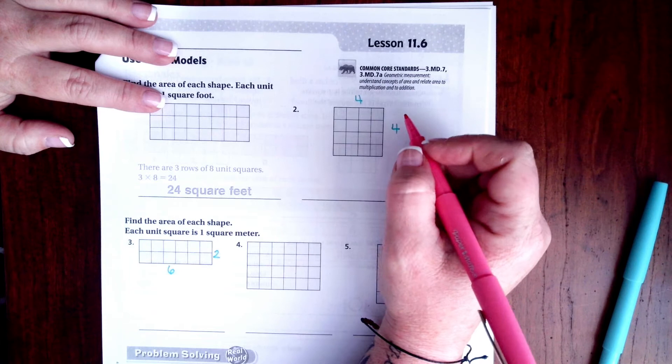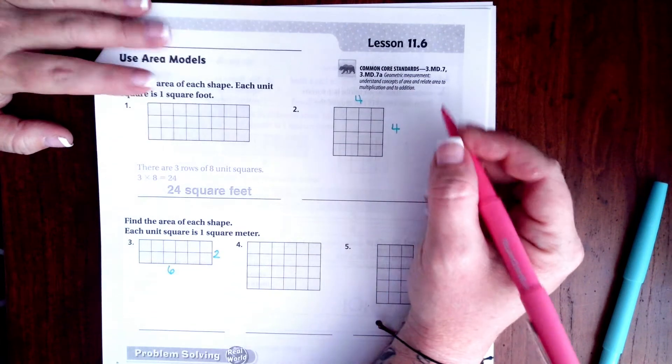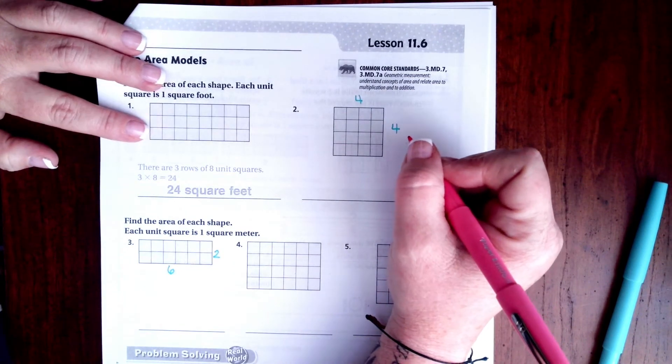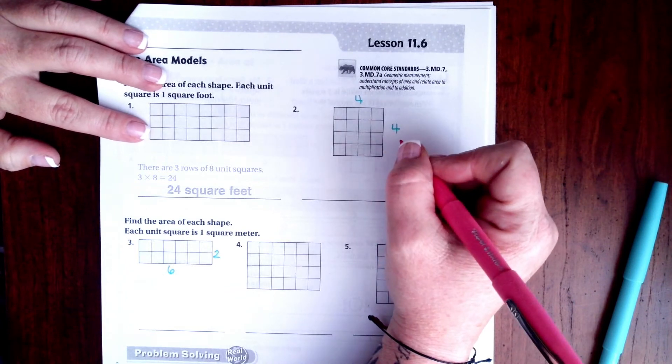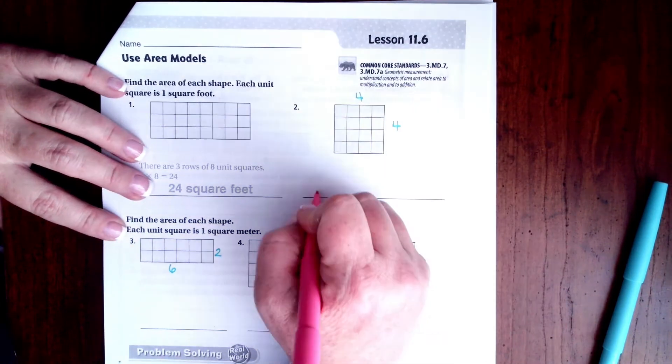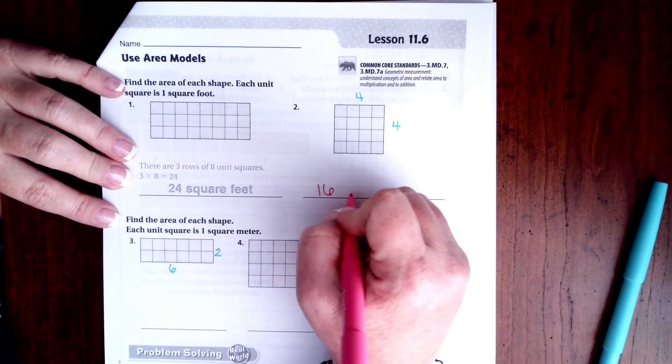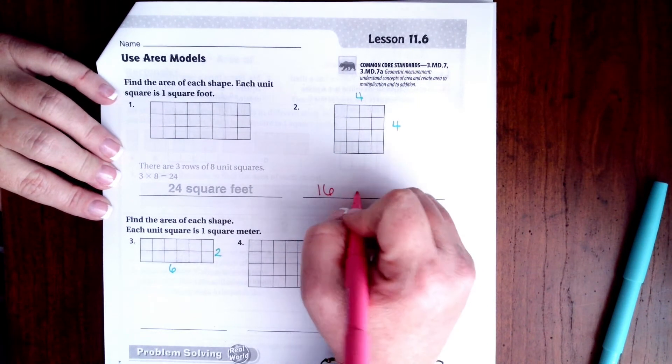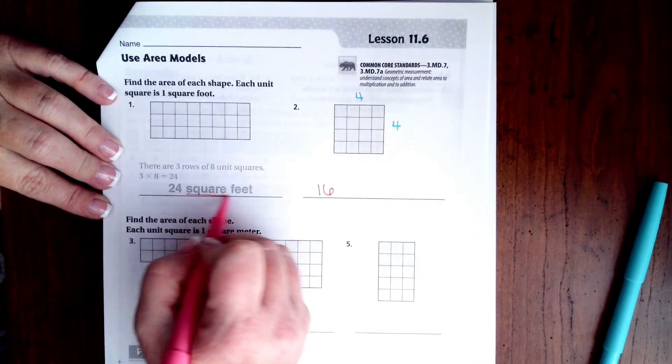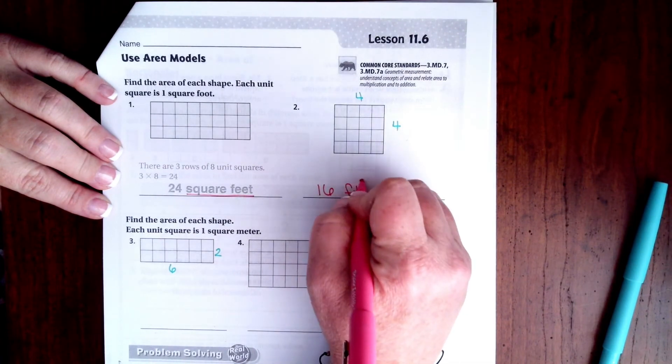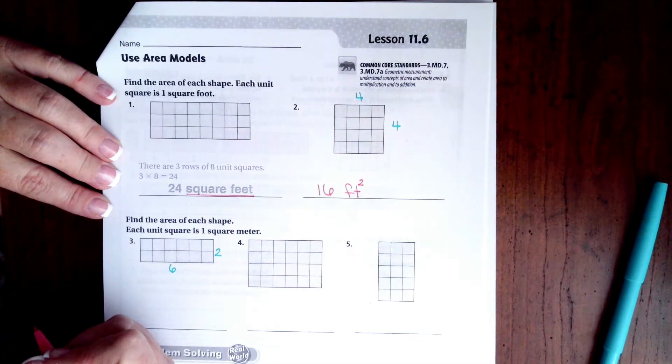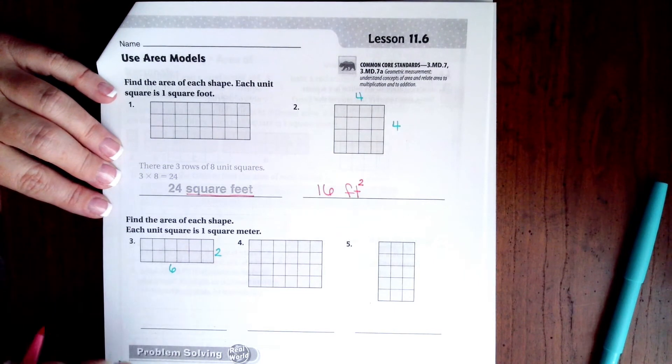When it is a square shape or a rectangle shape, you just get to multiply the two sides. Well, four times four is 16. Now I can either write out square feet like they did here, or I can put feet squared. Your choice, do your thing.